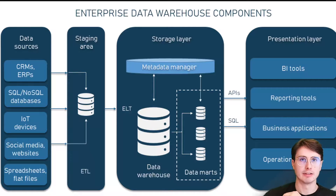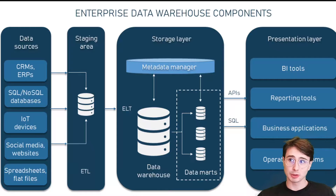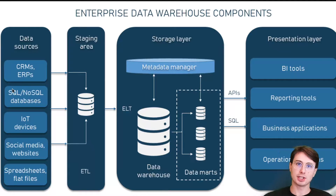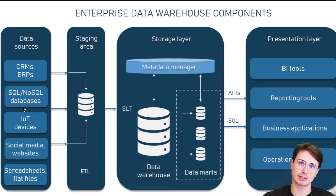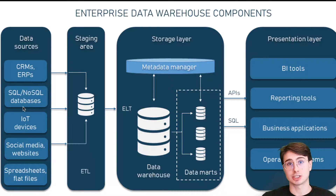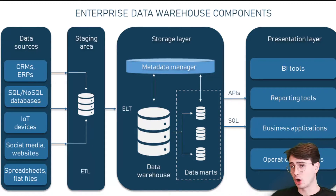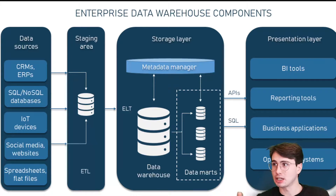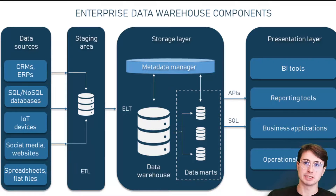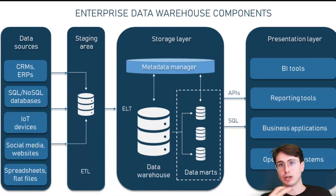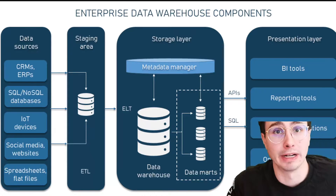At its most base level, a data warehouse is a centralized repository designed to store integrated data from multiple sources. These could be things like your CRM, your ERPs, other smaller SQL or NoSQL databases like a MongoDB database, IoT devices — maybe you're collecting information from robots on a factory floor — maybe it's social media, ad reports coming in from Facebook, or even just spreadsheets or flat files indicating how monthly sales did within a given month.